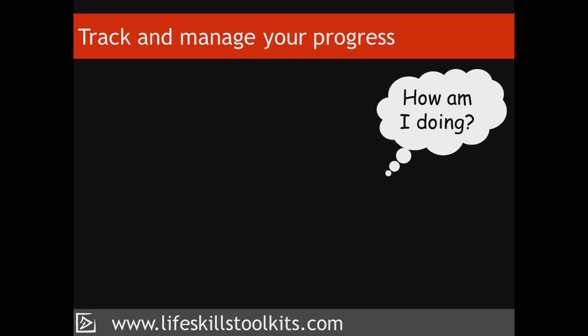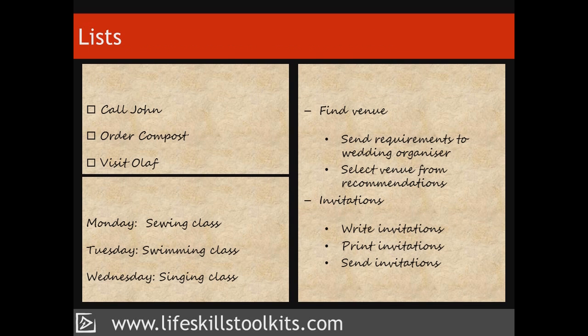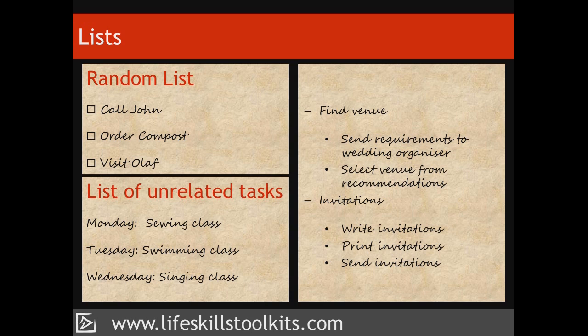Tracking your progress is a visual way of answering the question: How am I doing? Tracking can take three forms: lists, graphs, and motivational chains. The most common list used is a to-do list. To-do lists include lists of tasks, and these lists can be organised in different ways: a random list of unrelated tasks; a list of unrelated tasks to be worked through in some kind of order; or a structure, or outline, which involves breaking down tasks into smaller pieces or sub-tasks.